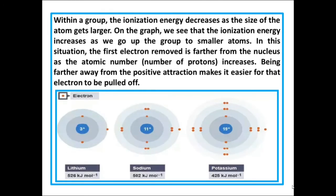Observe this diagram. Lithium ionization energy value is 526 kJ per mole. Sodium ionization energy value is 502 kJ per mole. And potassium ionization energy 425 kJ per mole. These are elements present within a group. Lithium atomic number 3, sodium atomic number 11, potassium atomic number 19. Lithium consisting of only 2 shells, sodium 3 shells and potassium 4 shells.